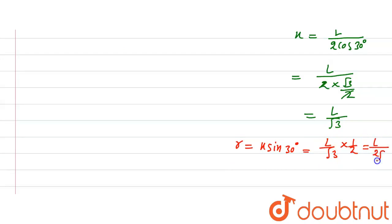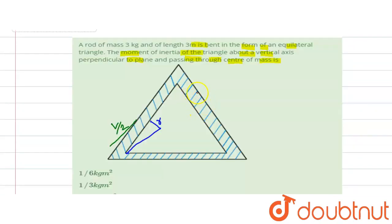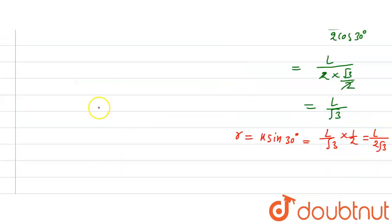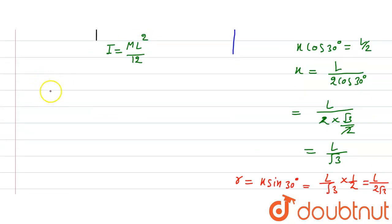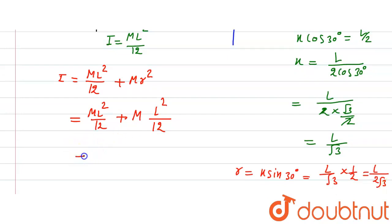The triangle has side length 1 m and each rod has mass 1 kg. Applying the parallel axis theorem, the moment of inertia of one rod is: I = ml²/12 + mr². Substituting r = l/(2√3), we get mr² = m · l²/12, so I per rod = ml²/12 + ml²/12 = ml²/6.